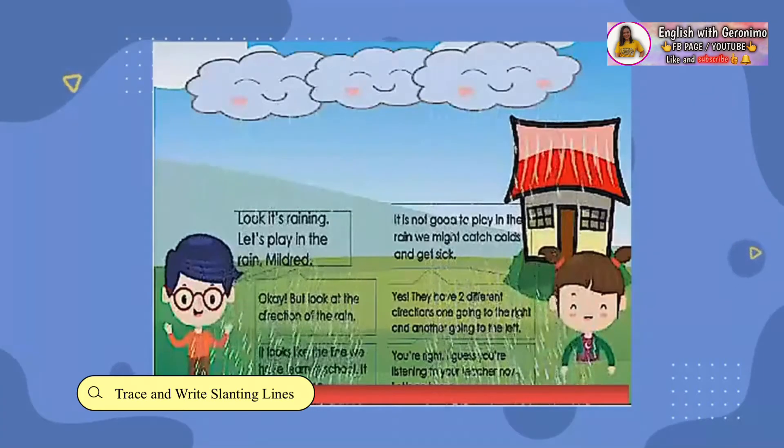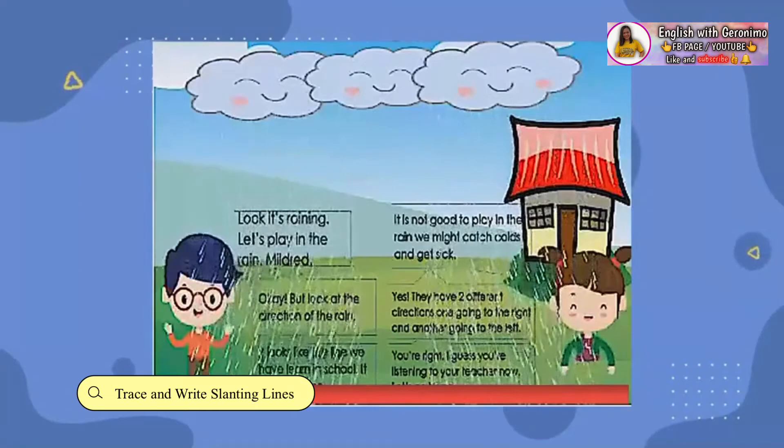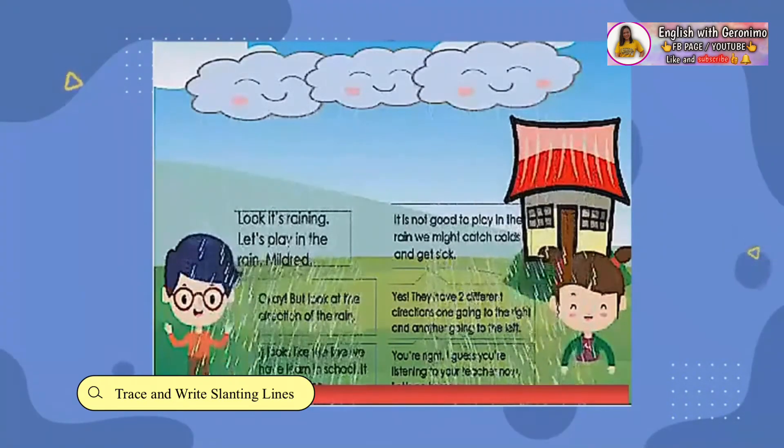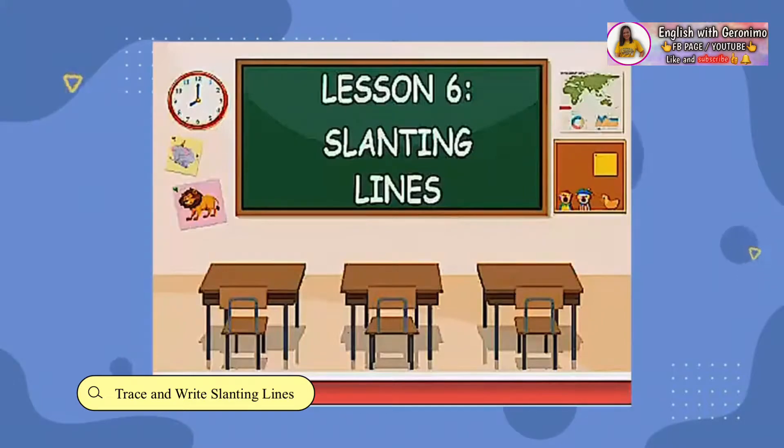What kind of line did the rain form? Can you guess what our next lesson is about? Very good! Our lesson for today is how to trace and write slanting lines.